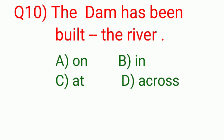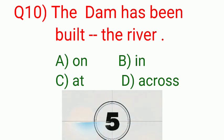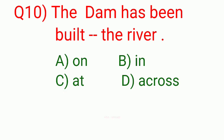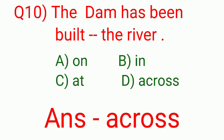The dam has been built dash the river. The right option, across. The dam has been built across the river.